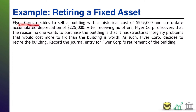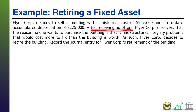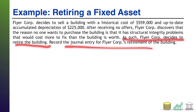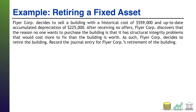Flyer Core decides to sell a building with a historical cost of five hundred fifty-nine thousand and up-to-date accumulated depreciation of two hundred twenty-five thousand. After receiving no offers, Flyer Core discovers that the reason no one wants to purchase the building is that it has structural integrity problems that would cost more to fix than the building is worth. As such, Flyer Core decides to retire the building — record the journal entry.